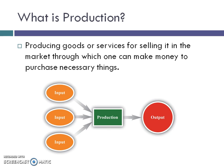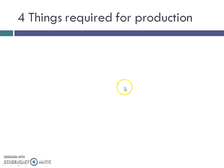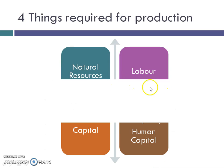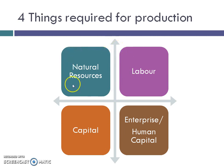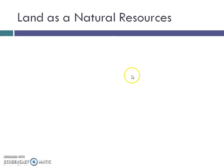So that's why we produce goods or services. Now, what are the things required to produce goods or services? There are four things: natural resources, labor, capital, and human capital. Let's understand one by one what these mean. Land as a natural resource.